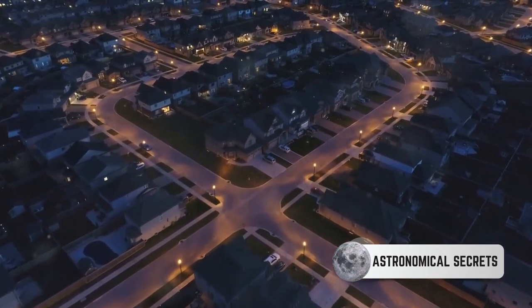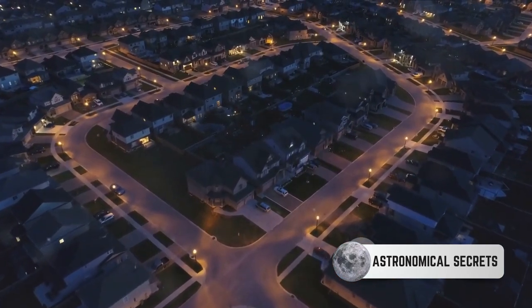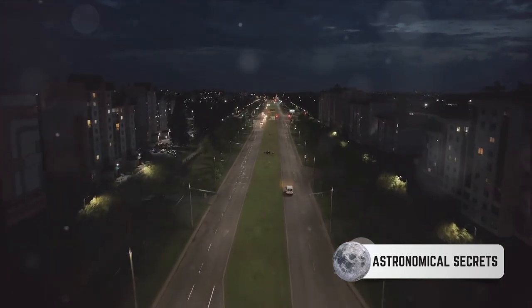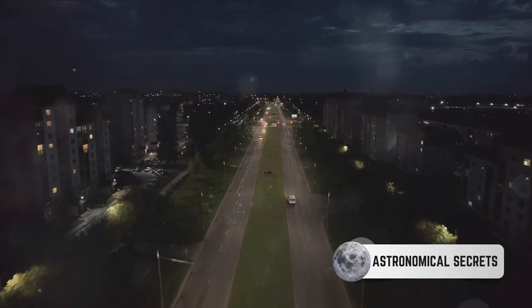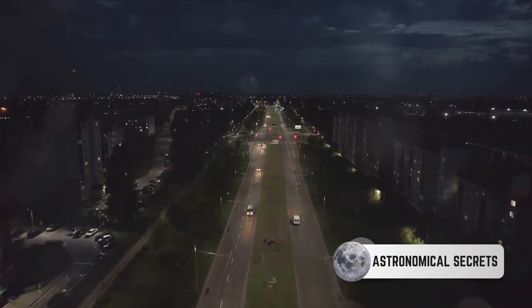Now if you knew exactly how bright each streetlight was supposed to be, you could calculate how far away each one is based on how dim it appears from your vantage point. This is the principle behind how astronomers use Type 1a supernovae to measure cosmic distances.